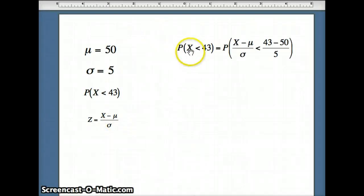So here we go. Probability x is less than 43 - I want to convert x into a z, so I'm going to subtract mu and divide by sigma. To be fair, I've got to do the same thing to 43: subtract mu, subtract 50, divide sigma which is 5. At this point now, x minus mu over sigma simply becomes a z.